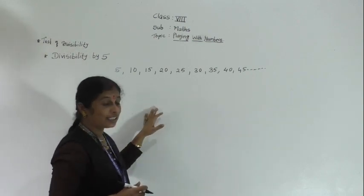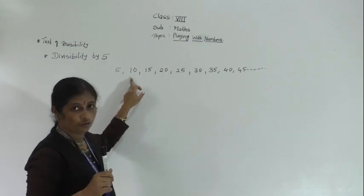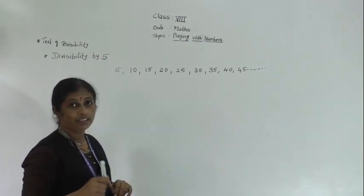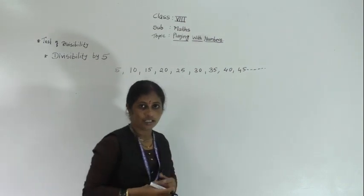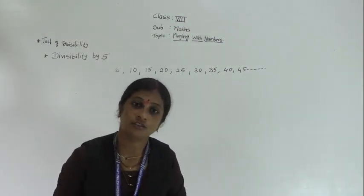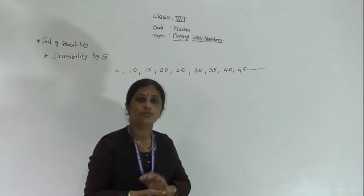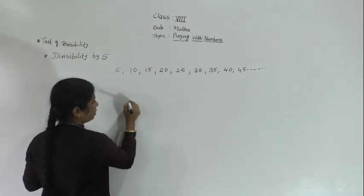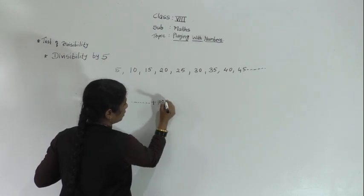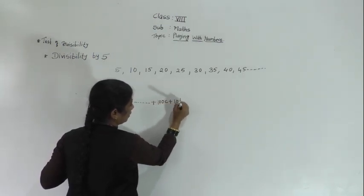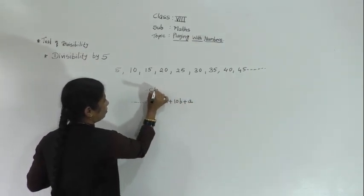We can say that if the unit place of the number is either 5 or 0, then that number is divisible by 5. The unit places alternate as 0, 5, 0, 5 and so on. So when the unit digit is 0 or 5, that number is divisible by 5. Now we will see this using the rule: the same number written as 100C + 10B + A.